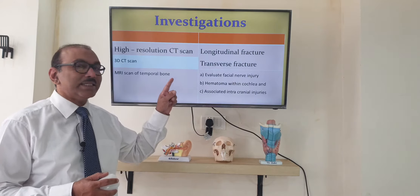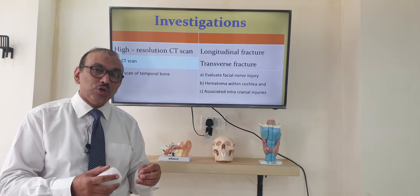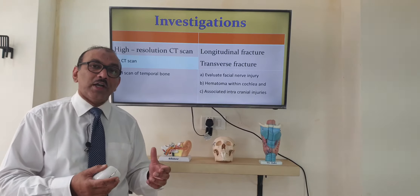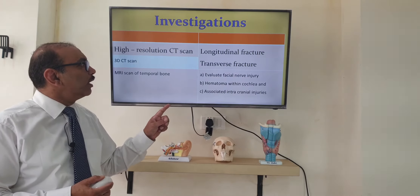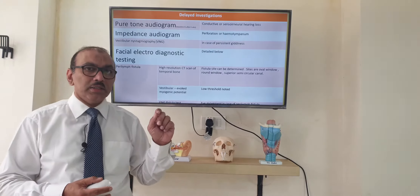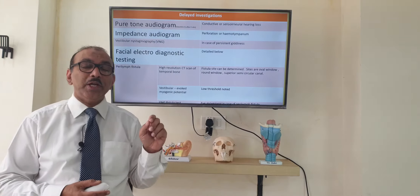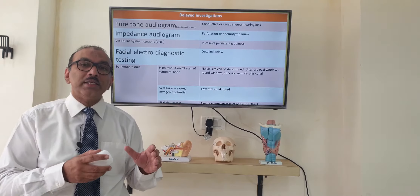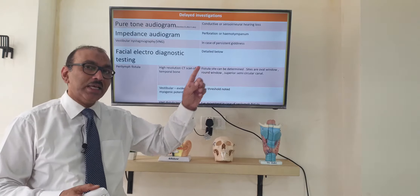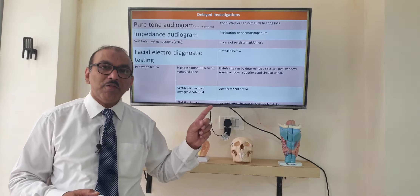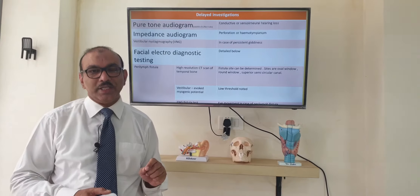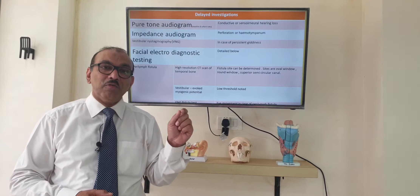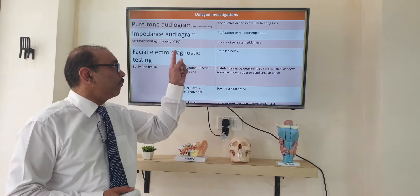Along with CT scan, sometimes the radiologist will tell you that there is soft tissue damage and we require an MRI — especially when the facial nerve is involved. Other than the scan, we may need to do a hearing test if the patient is fit for that, to determine whether it is a conductive loss involving the small bones of the middle ear, or a sensorineural loss involving the inner ear. We also do an impedance audiogram, which shows the middle ear pressure and can identify blood collection or fluid.